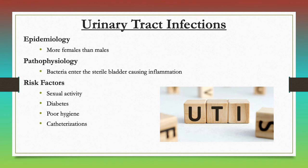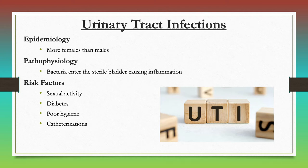Next, we're going to talk about UTIs — urinary tract infections — which occur more in females than males. They are characterized by bacteria that enters the sterile bladder, causing inflammation. Risk factors include sexual activity, diabetes, poor hygiene, and long-term catheterization. Foley catheters carry a high risk for CAUTIs.